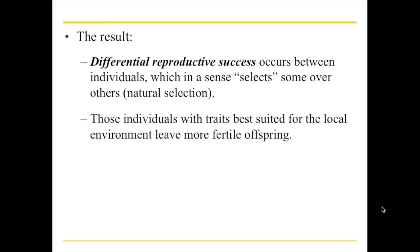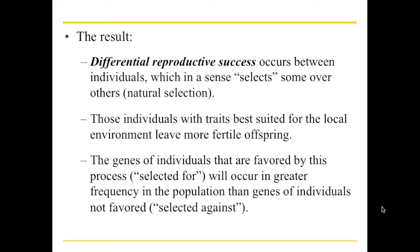Those individuals best suited for their environment are the ones that can leave more fertile offspring. In terms of genetic material, the genes of those individuals that are successful are selected for, and those that aren't as good are selected against. If somebody has a genetic disorder that makes survival or finding a mate more difficult, their genetic material may be selected against — perhaps they reproduce with less frequency, or their offspring are slightly less able to deal with the environment.